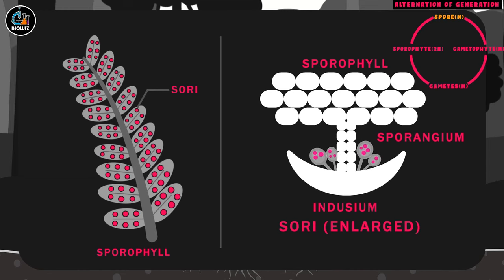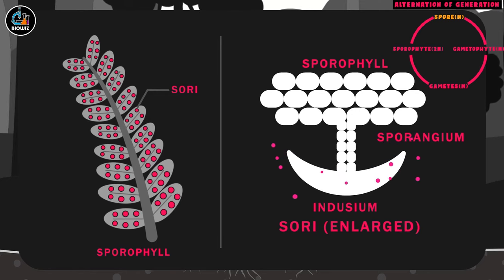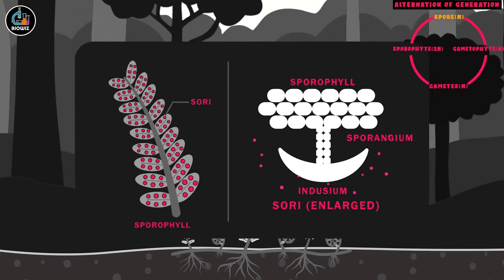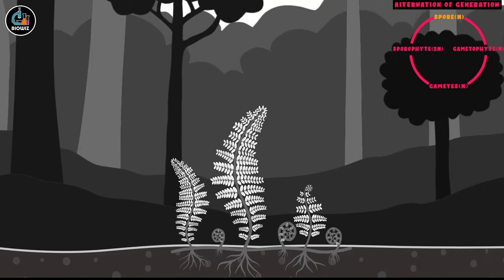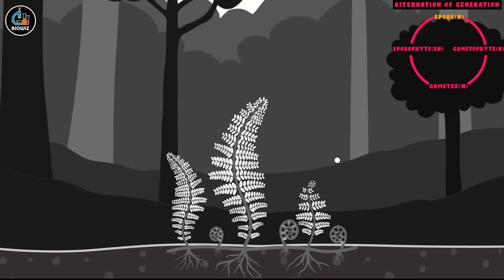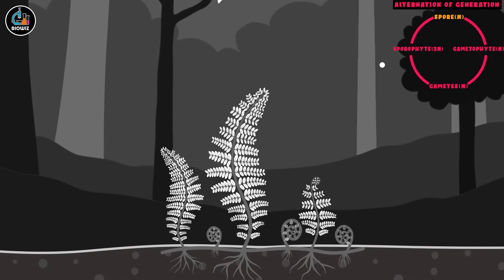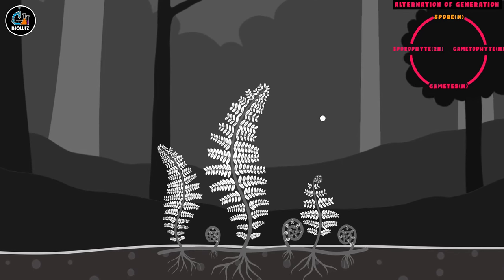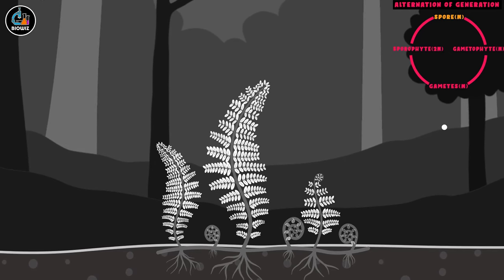In most of the pteridophytes, only a single type of spore is produced, that is, mostly pteridophytes are homosporous. But in some species, two different types of spores called microspores and megaspores, representing the male and the female spores, are produced. The spores formed are released, resulting in continuation of alternation of generations in pteridophytes.